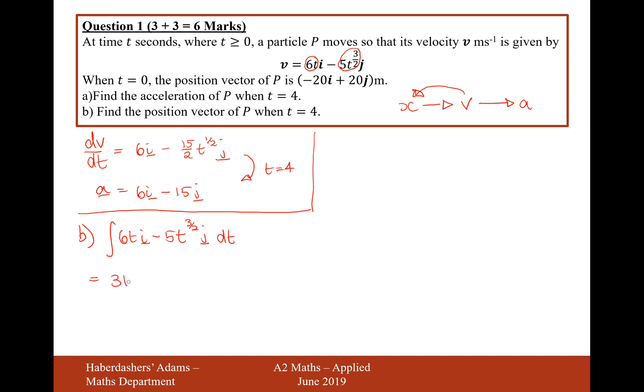So increase the power by 1 divided by the new power, 3t squared i minus, increase the power by 1, that's 5 over 2, divide 5 by that, so it's going to be 2t to the power of 5 over 2j. And then there's going to be a plus c. Now the c is going to be a vector, it's going to be part i and part j. This is the position vector, x.